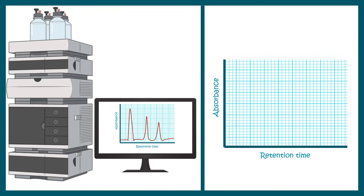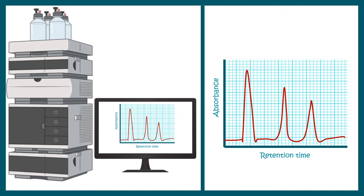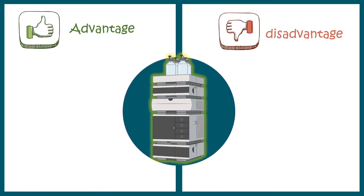On the monitor, an absorbance versus retention time graph is plotted — this is the chromatogram. The number of peaks in the chromatogram indicates how many analyte molecules are present, and the retention time helps us understand the sequence of elution of each analyte.